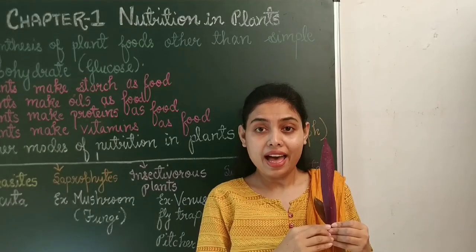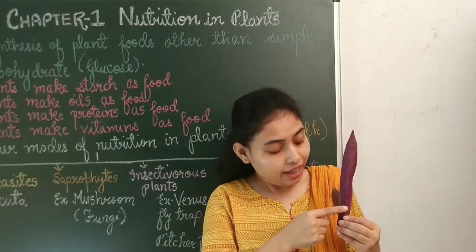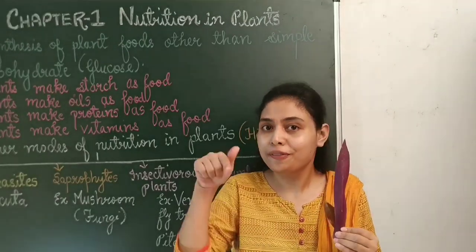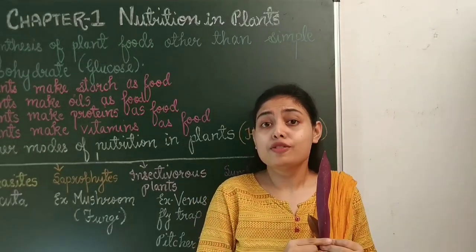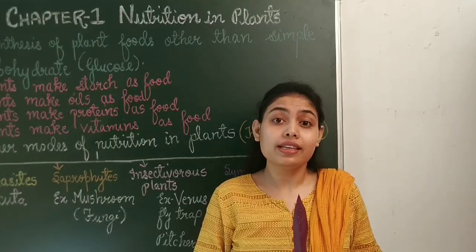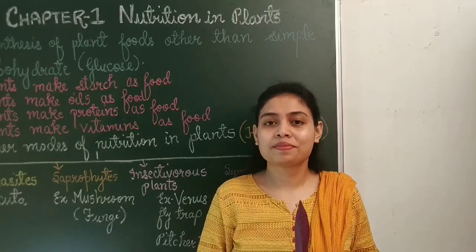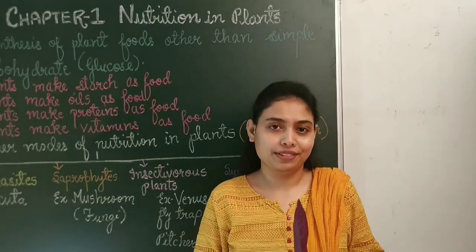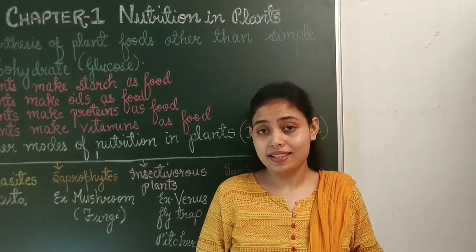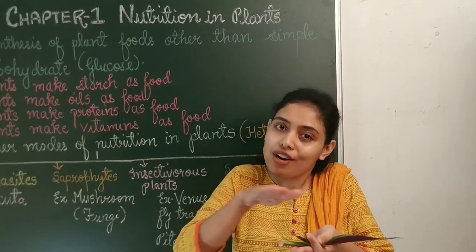I have two leaves of different colors. The first leaf is purple in color and the second leaf is brown in color. One question for you all: if a leaf is not having green color, can it perform photosynthesis? Think about it. The answer is yes. Even leaves having a color other than green can perform photosynthesis. They have chlorophyll but the amount of chlorophyll is very less and is overlapped by the other colors.